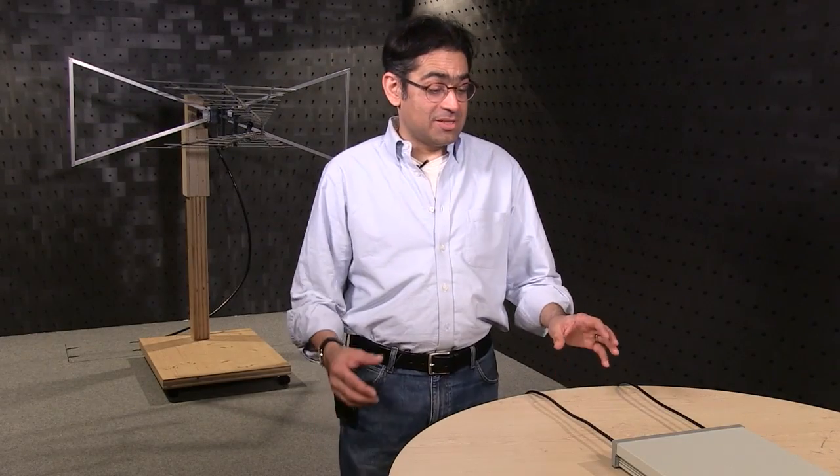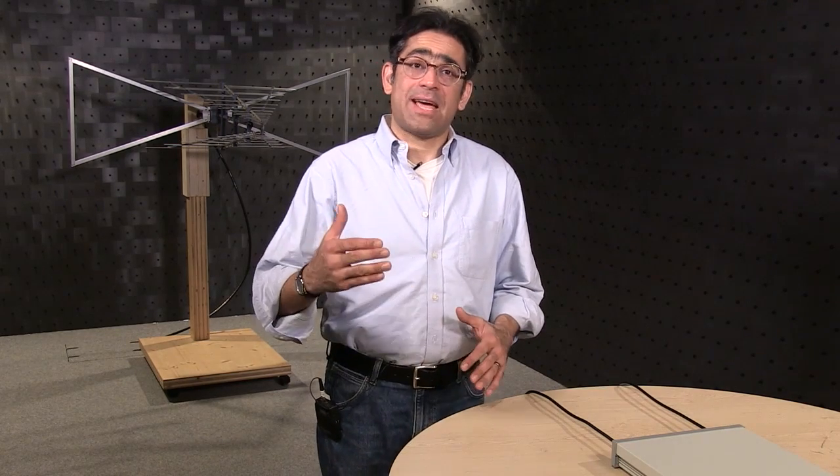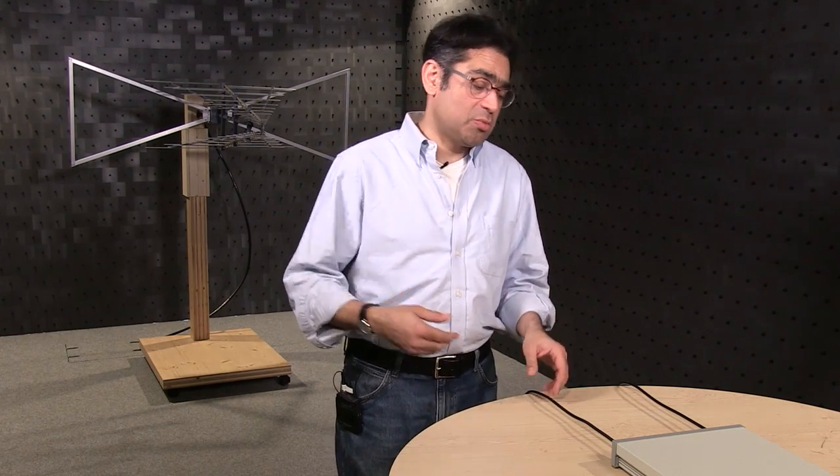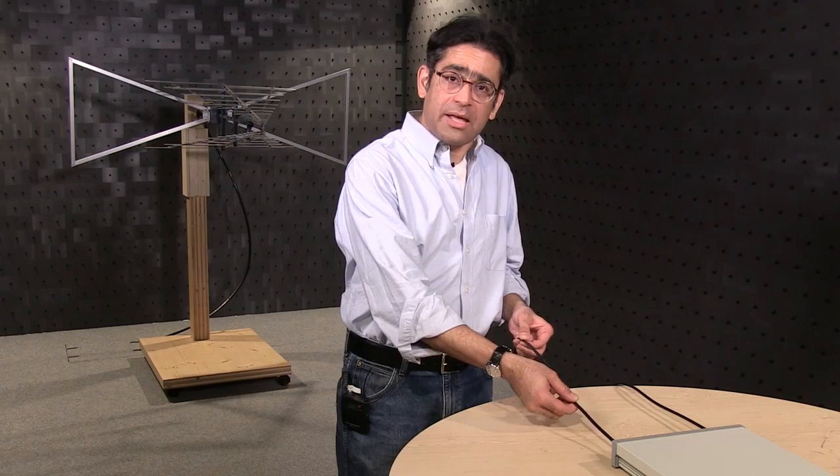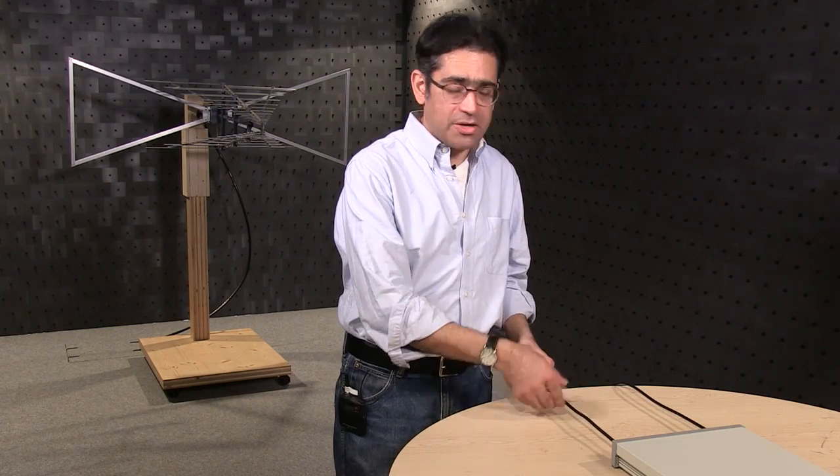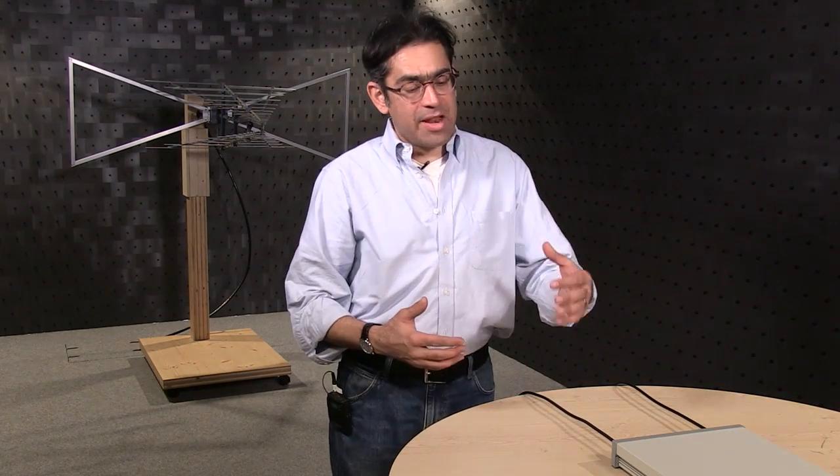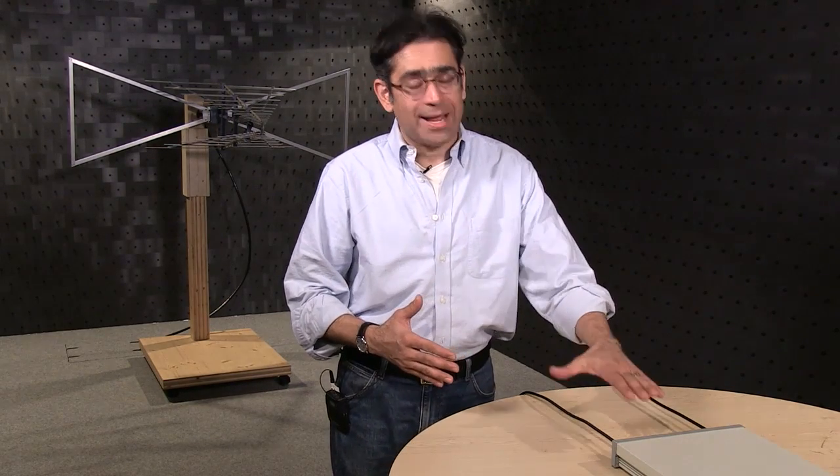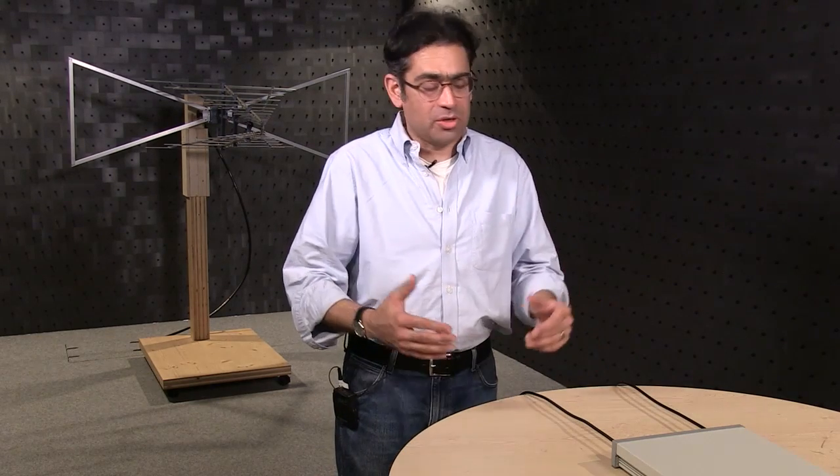Another test that is usually carried out at the EMC test house as opposed to at pre-compliance is the conducted immunity test. In the conducted immunity test what we are trying to do is we are trying to couple electromagnetic energy onto the cables of our device under test and then the standard states at a certain performance criteria when we look at how the performance of the device under test changes or perhaps not changes.